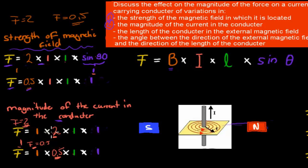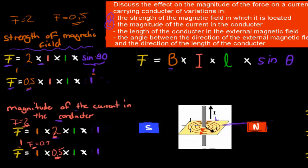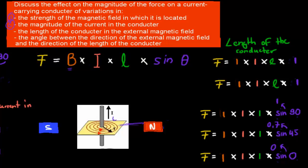That also makes sense because the more current moving through the conductor, the stronger the internal magnetic field the conductor produces. So the external magnet will push against an even stronger internal magnetic field, making the force even bigger. If we have a greater current, that creates a greater internal magnetic field, and that produces a greater force between the magnet and the conductor. If we increase current, we increase force; if we decrease current, we decrease force.